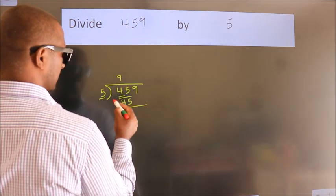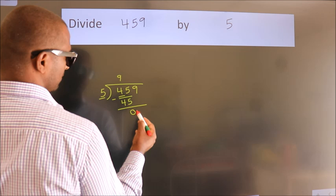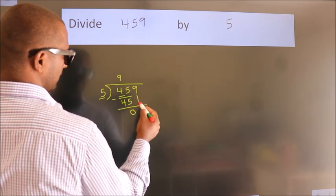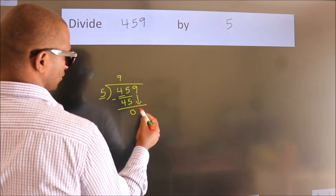Now we should subtract. We get 0. After this, bring down the beside number, so 9 down.